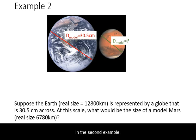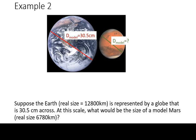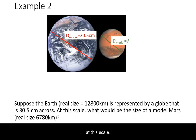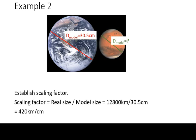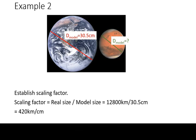In the second example, we are given the model size for the Earth, and we are asked to figure out what would be the model size of Mars at this scale. First, we need to establish the scaling factor by dividing the real size of Earth by its model size. We get 420 km per cm.